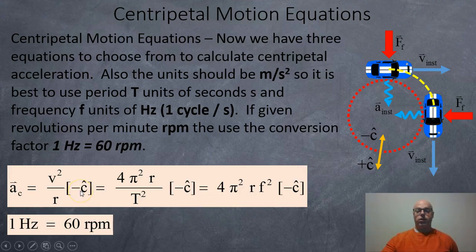So now we have three formulas for centripetal motion: v² over r, 4π²r over T², and 4π²rf². Now it's important we use scientific units just to make things easier. So acceleration probably should be measured in meters per second squared. And in that case, periods should be in seconds. And frequency should be in hertz, which is a cycle per second. So if you're given RPM, revolutions per minute, you just need to convert them to hertz. And it's easy. One cycle per second, one hertz, is the same as 60 revolutions or cycles per minute.